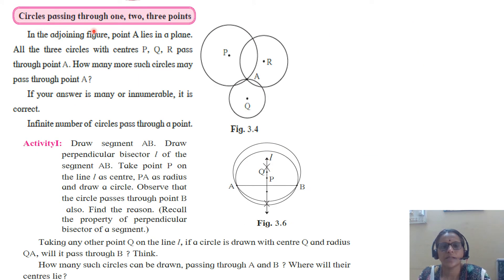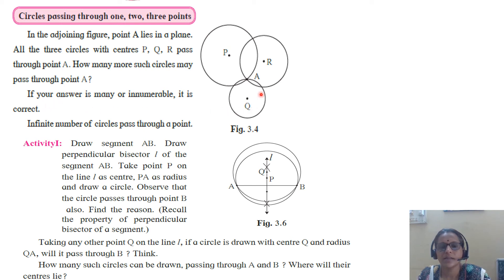Circle passing through 1, 2, and 3 points. Circles with centers P, R, and Q are observed. Point A lies in a plane and all three circles with centers P, Q, and R pass through point A. How many such circles can pass through point A? Infinitely many circles can pass through point A.